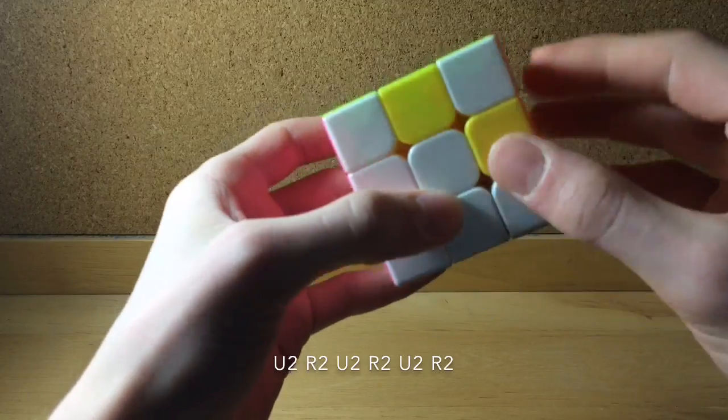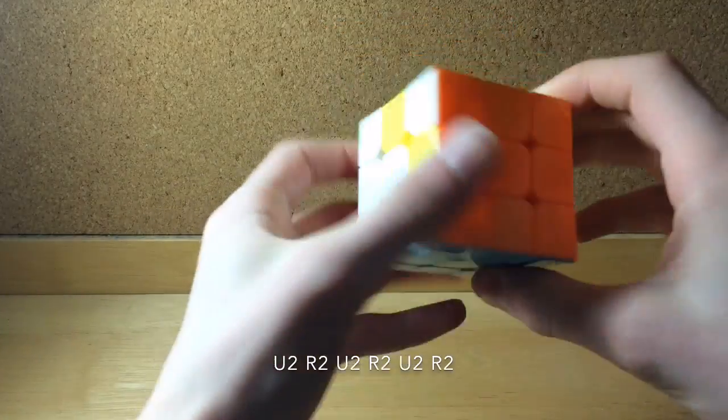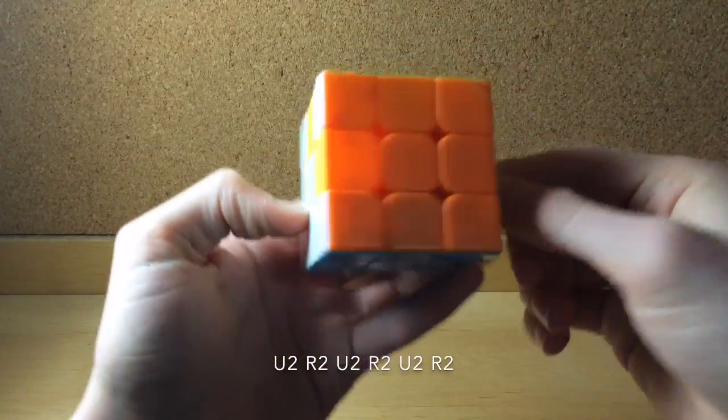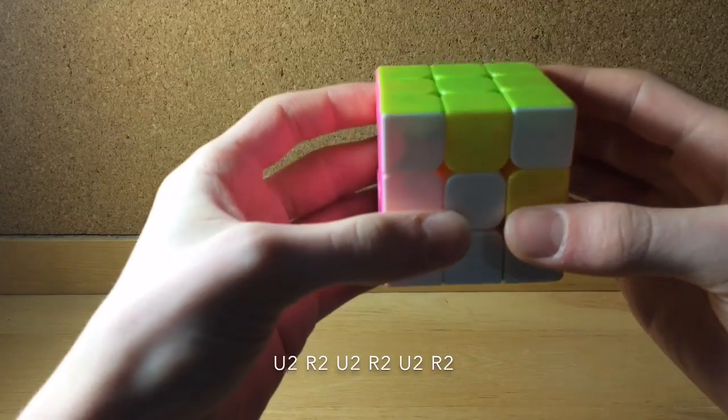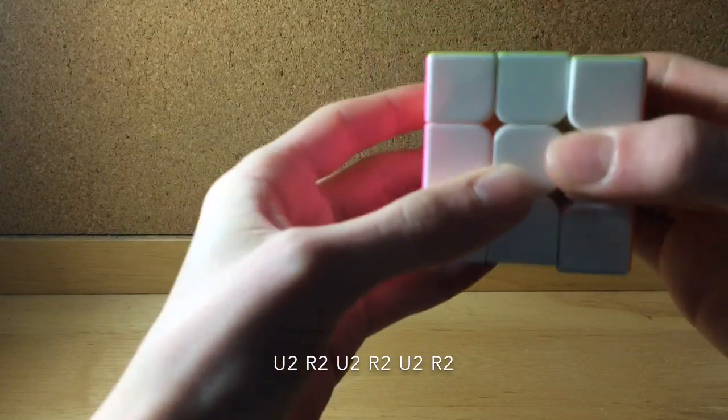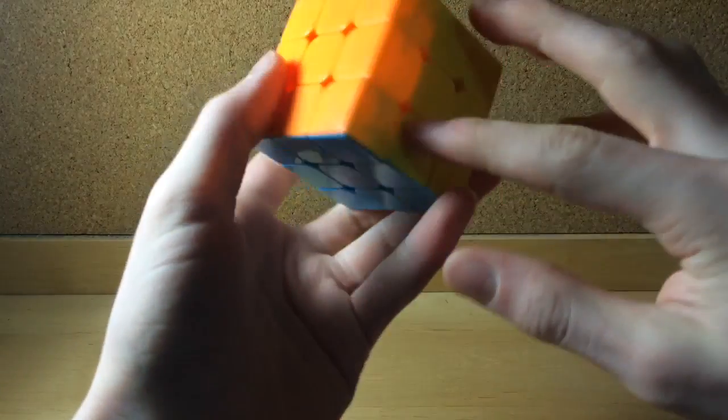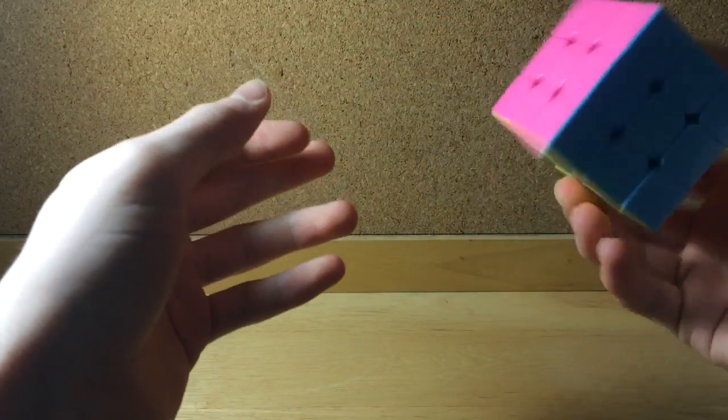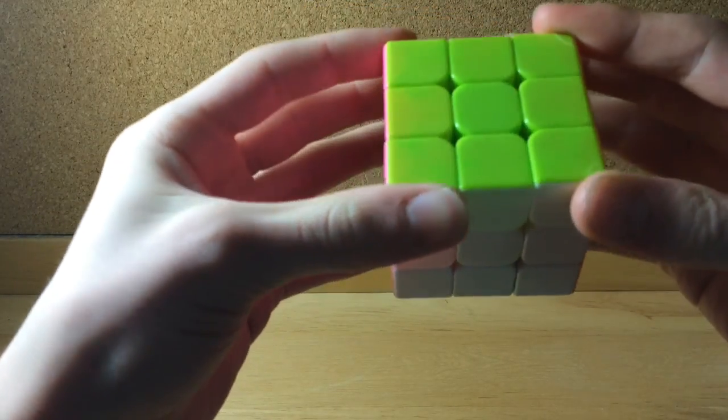And it flips these two, so say you're trying to do F2L and these two happen to be switched, then you can just do this and the first two layers will be completed. So I just found that it's actually pretty useful sometimes.